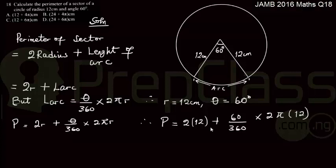Cancelling out, 60 in 360 will give me 6. Now, 6 in 6 is 1, but 6 in 12 is 2.